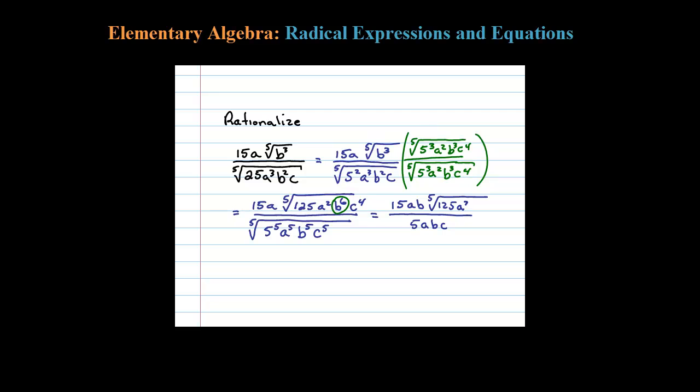We've actually rationalized it at this point. We just need to simplify, so it looks like an a can cancel, the b will cancel...